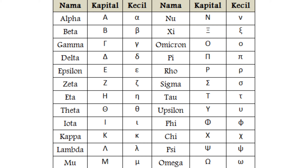Upsilon, Phi, Chi, Psi, Omega. Itulah huruf alfabet di dalam bahasa Yunani dari Alpha sampai dengan Omega. Huruf-huruf tersebut sering kita temukan di dalam pelajaran matematika.